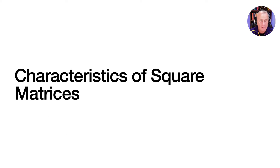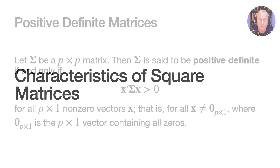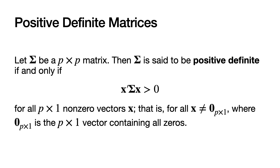So we'll first look at characteristics of square matrices. Let CAP-SIG be a P by P matrix. So it is P by P — it has the same number of rows as columns, P rows and P columns — and so it is a square matrix.